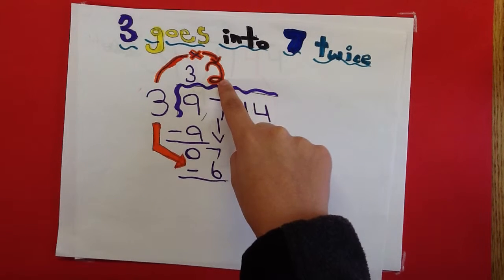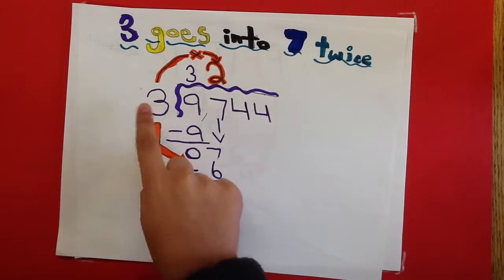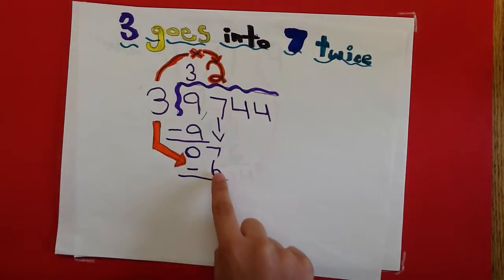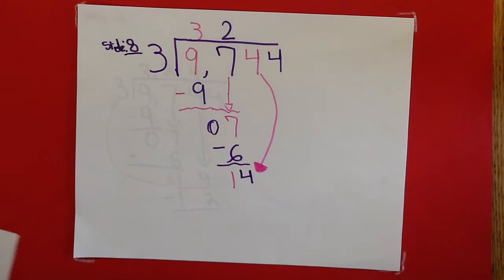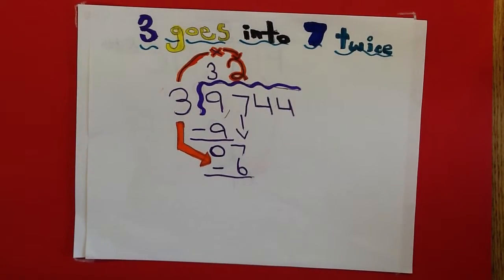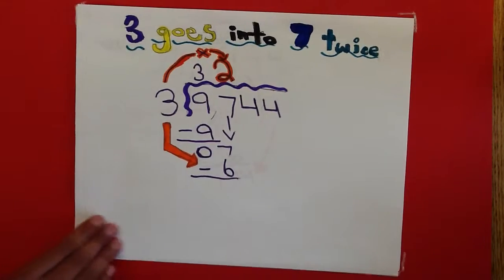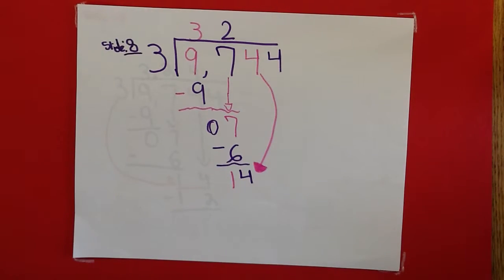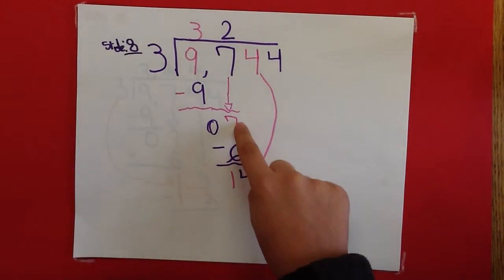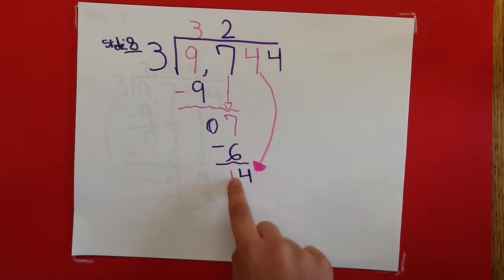Now multiply 2 times 3. You get 6. Write the 6 under the 7. Now you subtract 6 from 7 and you get 1. Write down the 1 below the 6.